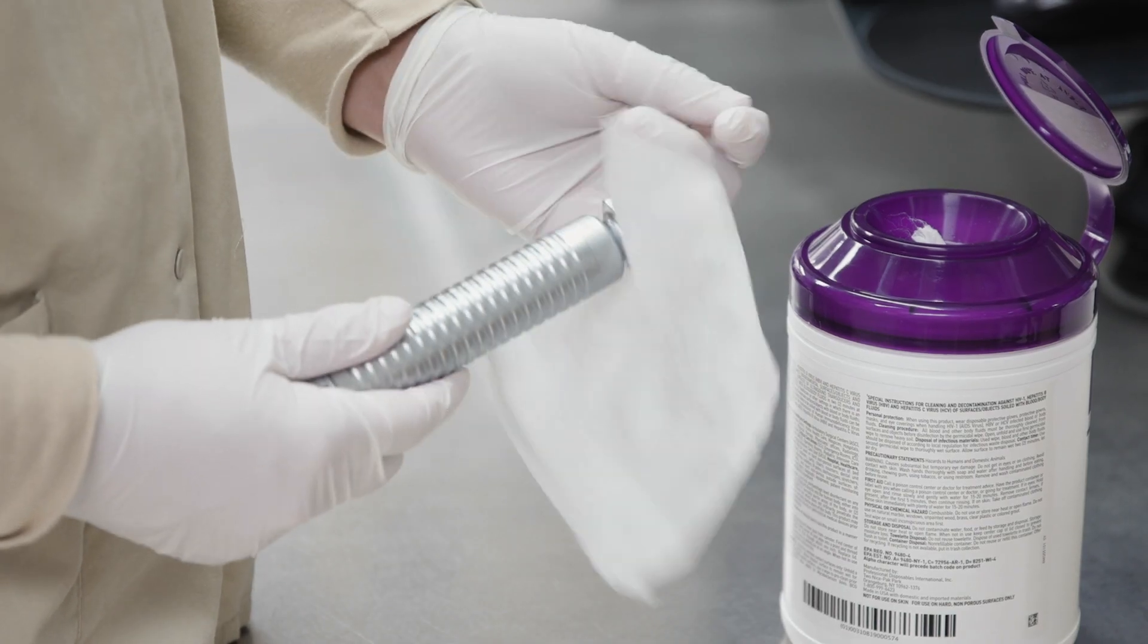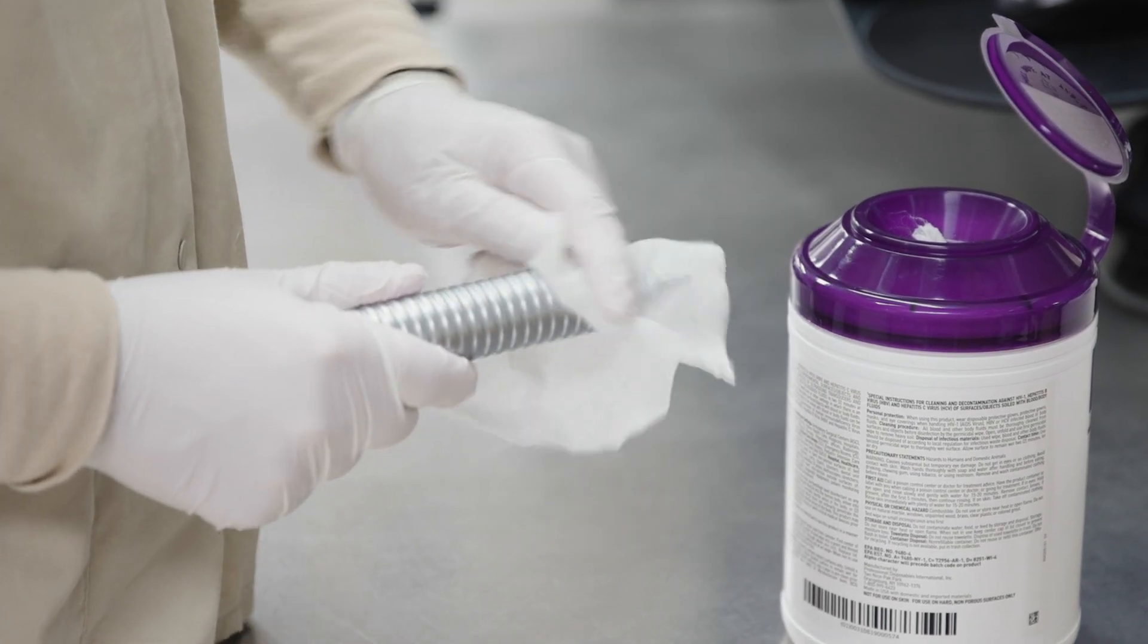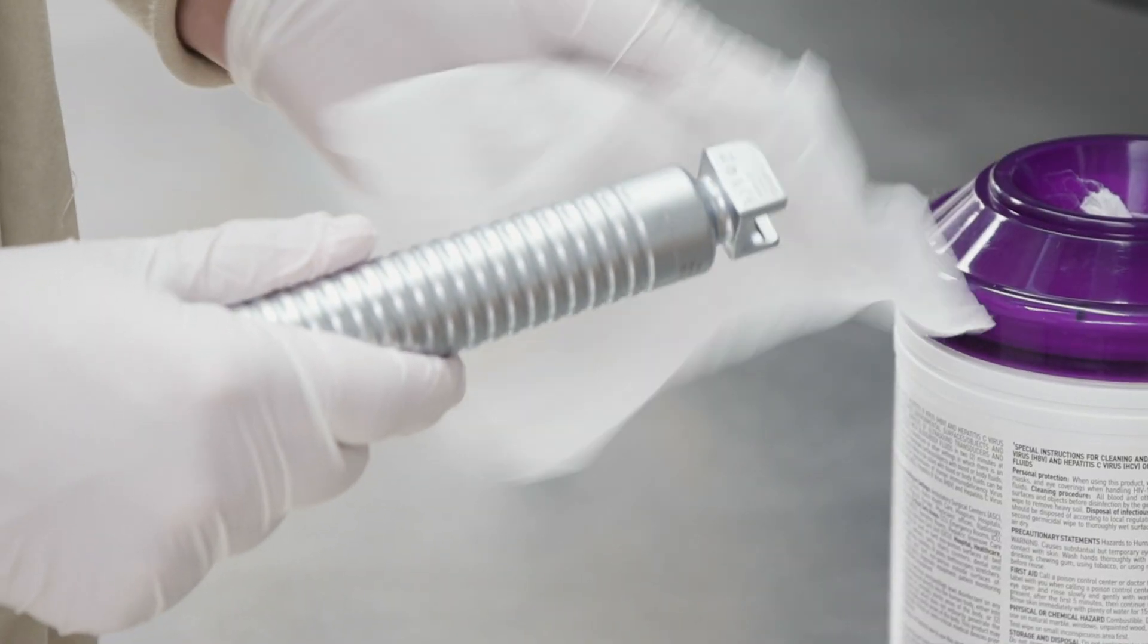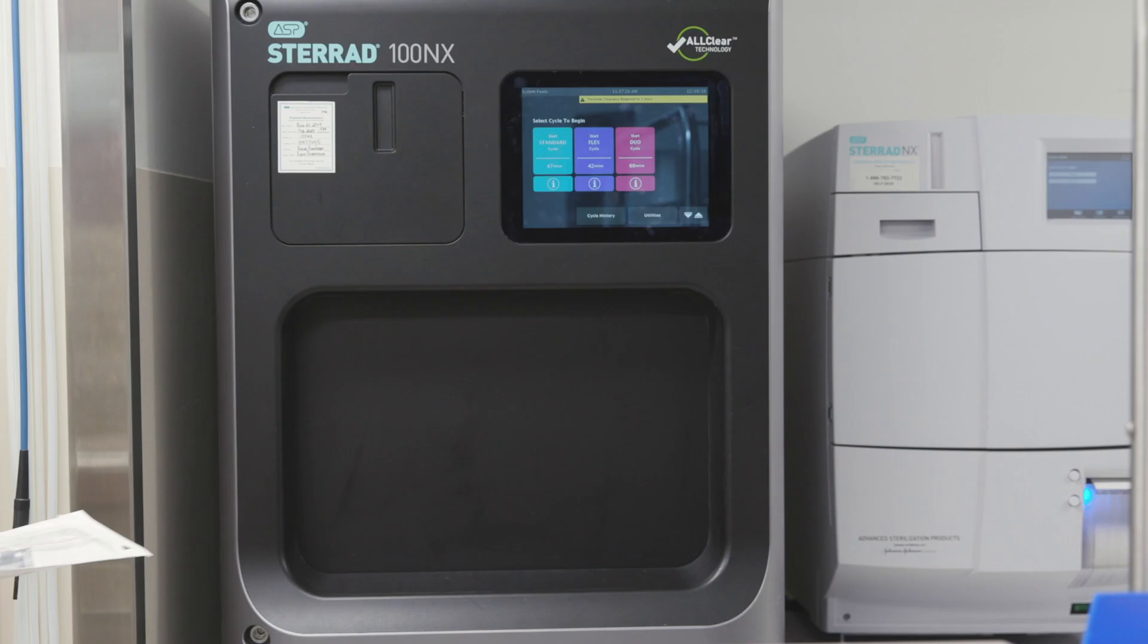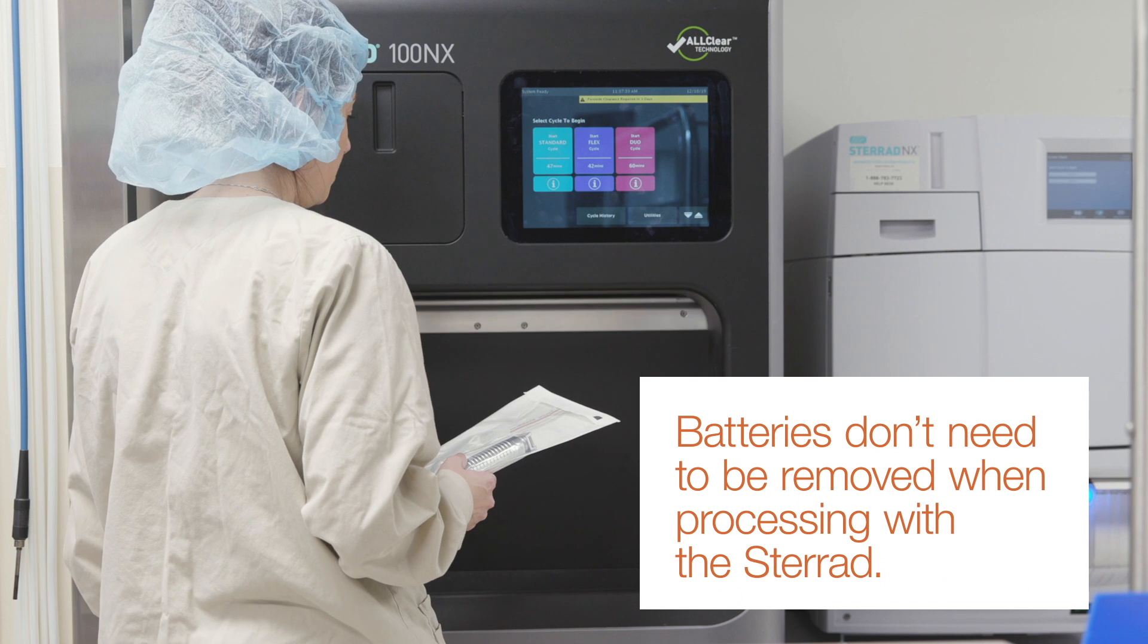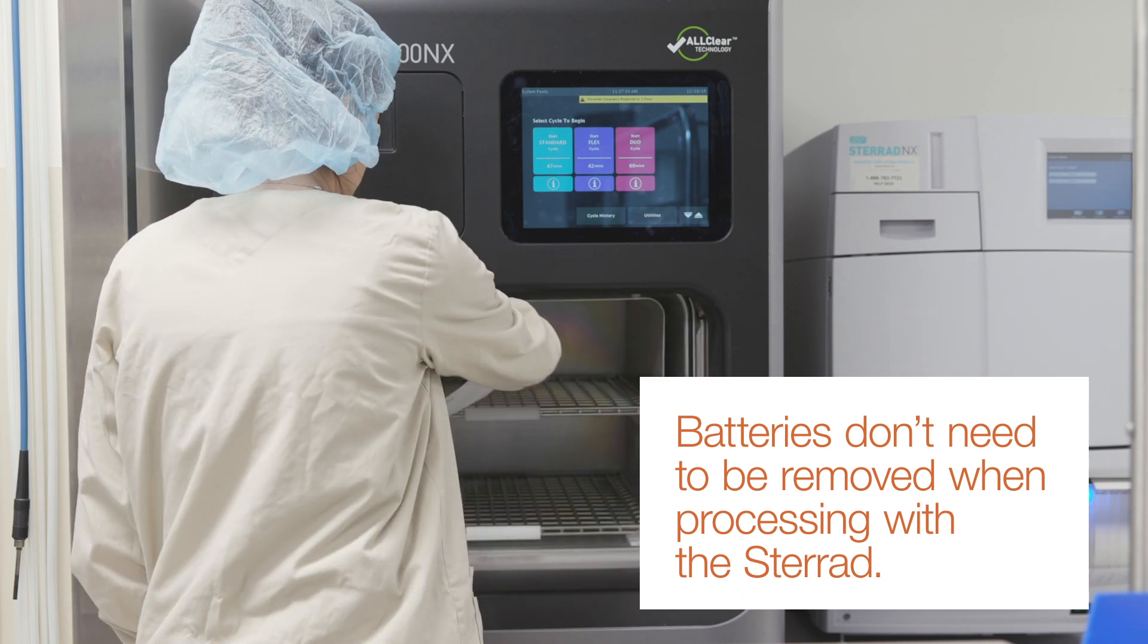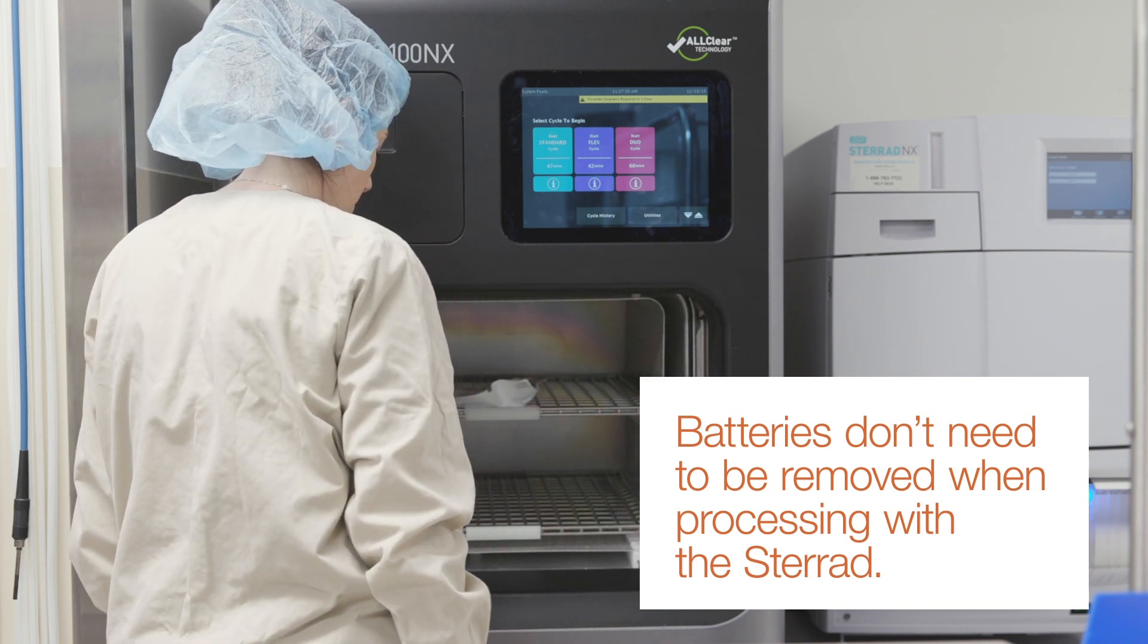Examples of these options include low-level surface disinfection with quaternary ammonium or alcohol wipes that requires you to simply wipe down the device, and sterile hydrogen peroxide sterilizer that includes an easy five-step process.